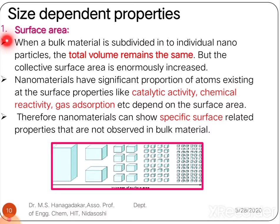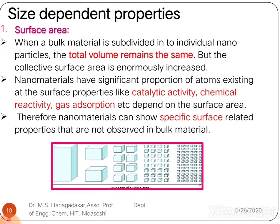First property: surface area. When bulk material is subdivided into nanoscale, the total volume remains the same but the collective surface area enormously increases, as shown in the figure. A single three-dimensional object subdivided two times, then eight times, then further — at nanoscale, the total volume remains the same but the collective surface area exposed for reactants increases.